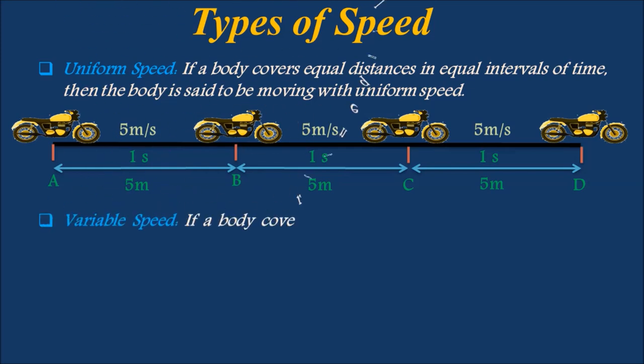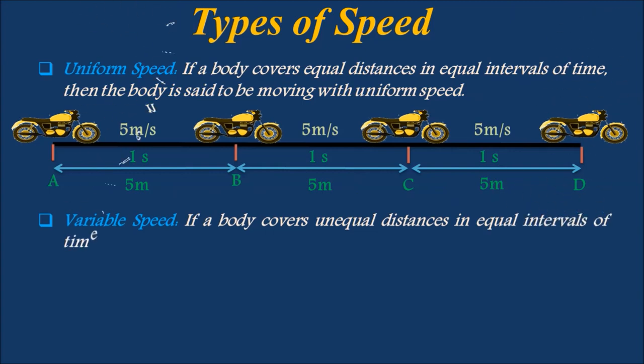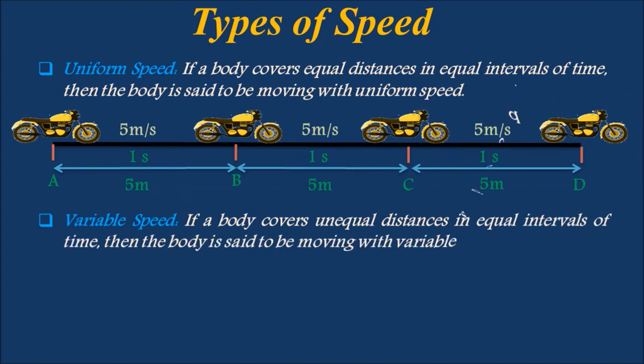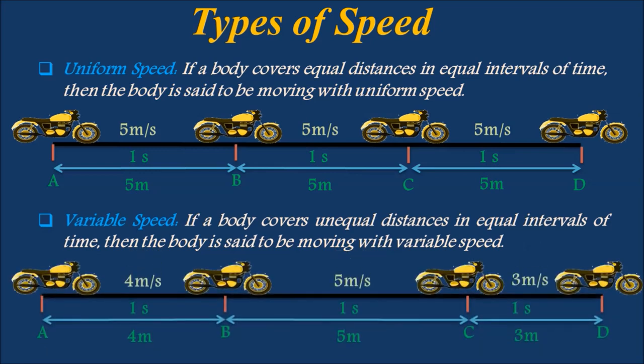If a body covers unequal distances in equal intervals of time, then the body is said to be moving with variable speed. Here, the bike covers 4 meters along path A-B, 5 meters along path B-C, and 3 meters along path C-D, each in equal intervals of 1 second. So the bike has variable speed of 4 m/s along A-B, 5 m/s along B-C, and 3 m/s along C-D.